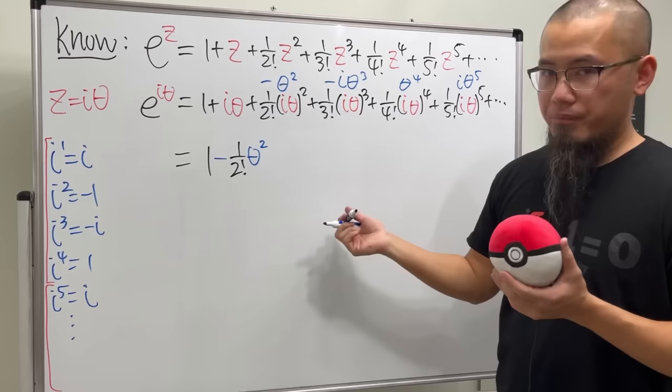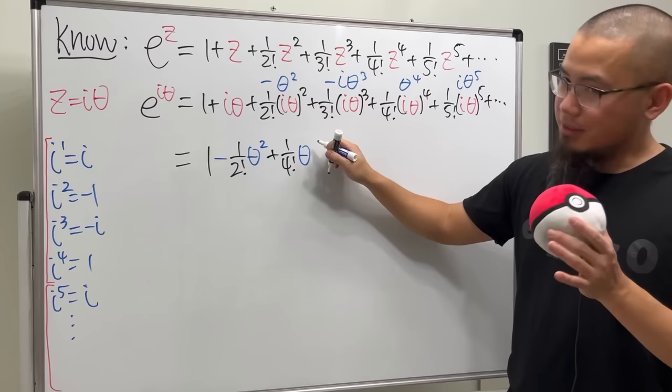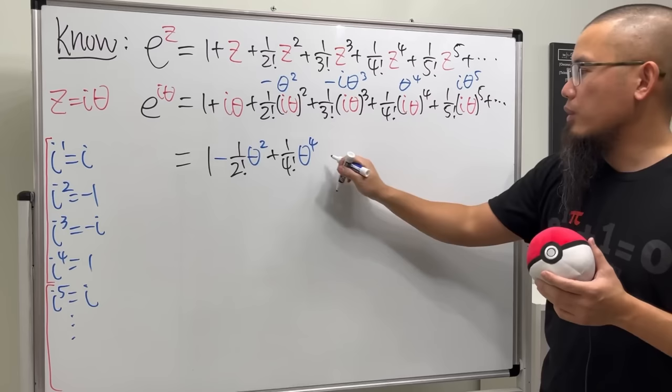This one has i, so I'm not going to put that down. But this one, it does not. And this is a positive. So I'm going to add 1 over 4 factorial. And then this is theta to the fourth power. And then, in fact, the next one is going to be this. And it actually is a negative, right? So we will just put down negative and then dot, dot, dot. So this is the first part.